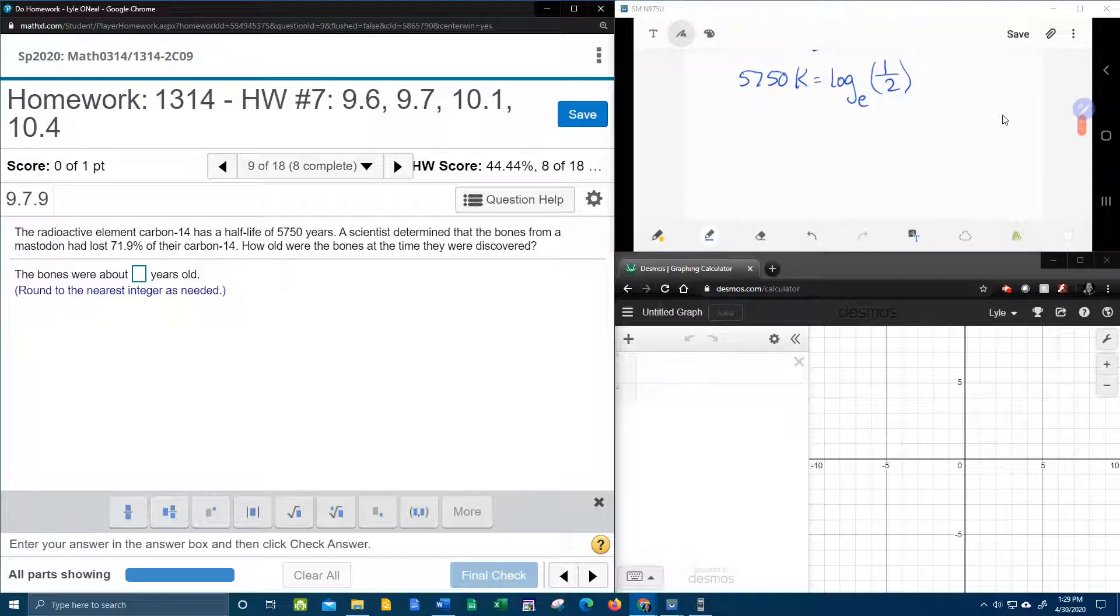Now, how many people remember that log base E is natural log? So we can replace log base E with natural log. I'm also going to replace the one-half with 0.5. I don't know why, just because I feel like it. And then if you notice, we're really close to getting K by itself. So the last step is to divide both sides by 5,750. And then we're going to have the value for K. And we're going to need our handy-dandy calculator.